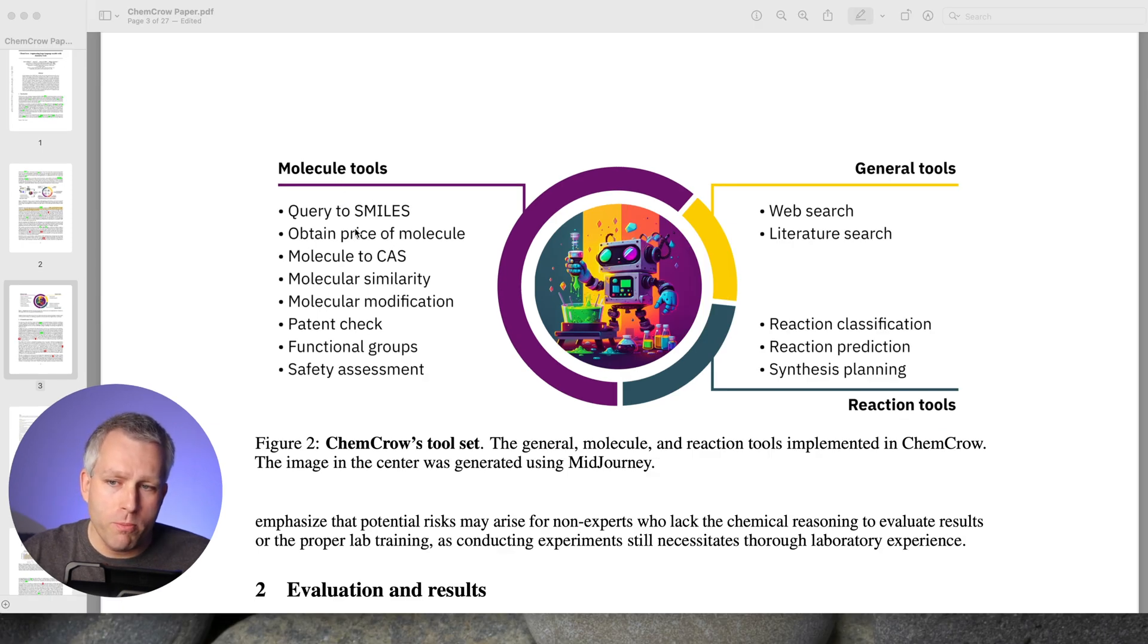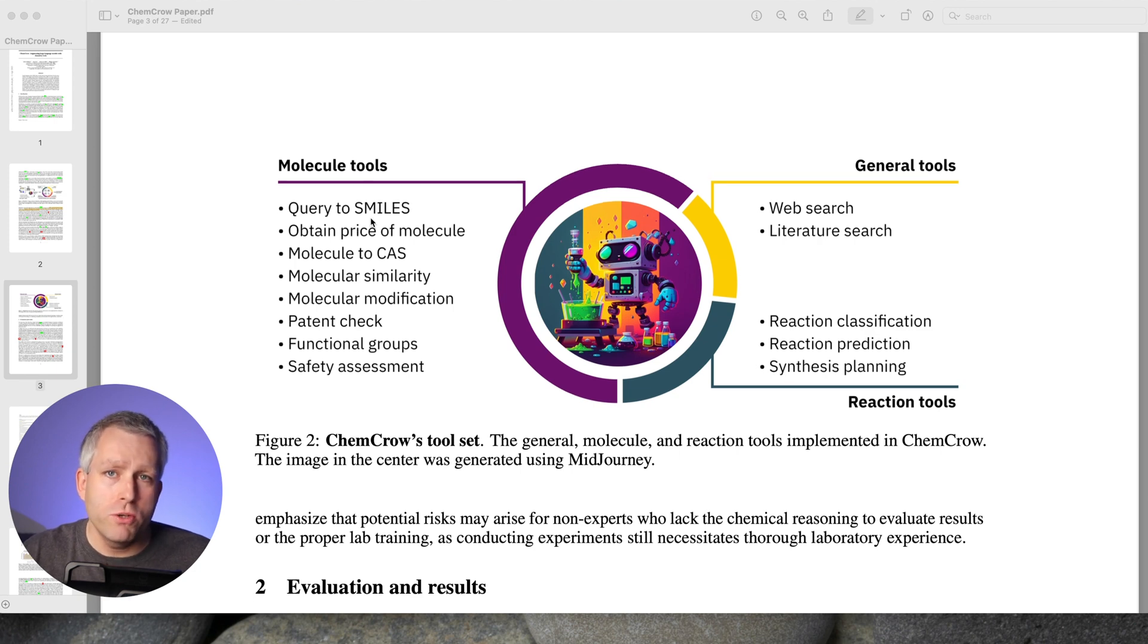Molecule tools are super important because without it, I found GPT-4 is really lost, particularly converting chemical structures into SMILES, which is a format that computers use when they work with chemical structures. Then obtain price of molecule, that's pretty self-explanatory. Thermomize molecule to CAS. CAS is a unique identification number for chemical compounds. It's very useful if you're doing other searches. Molecule similarity, molecule modification, they can do patent check, and also look at functional groups.